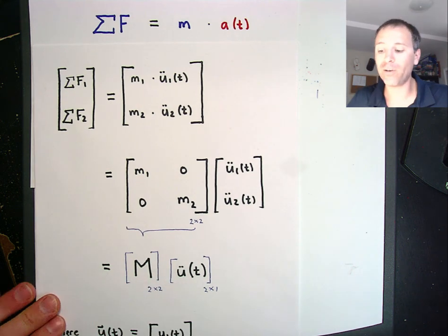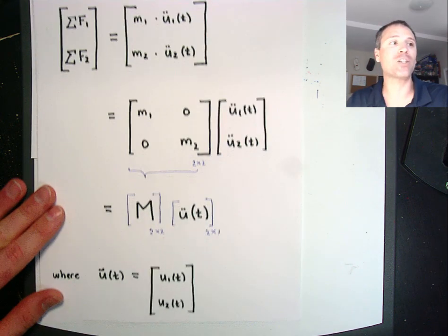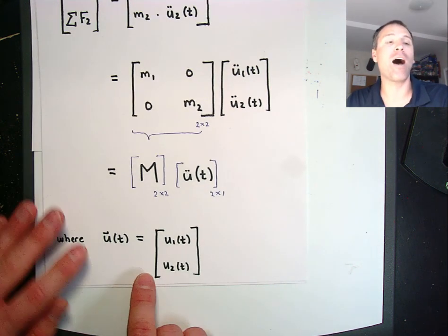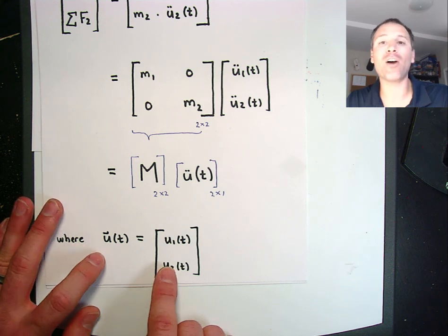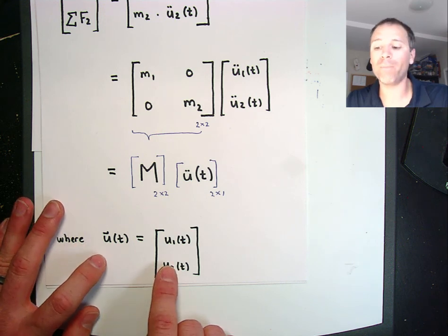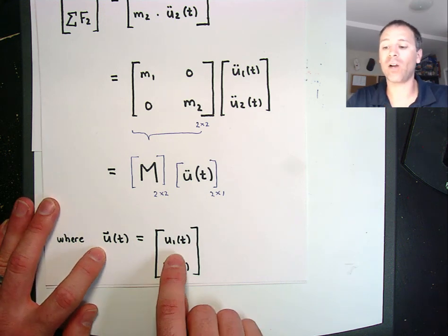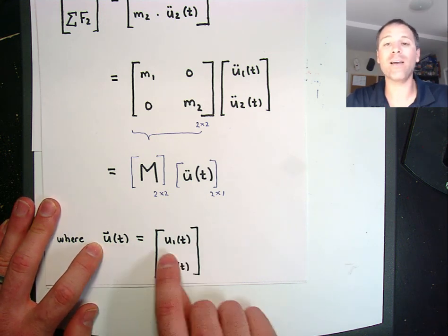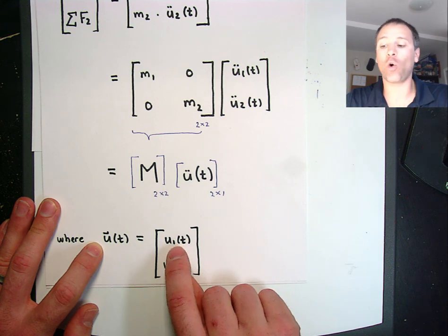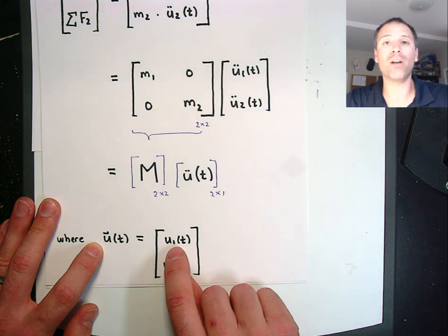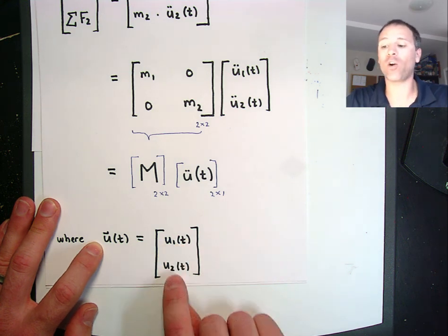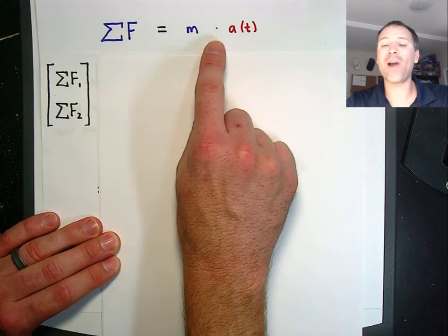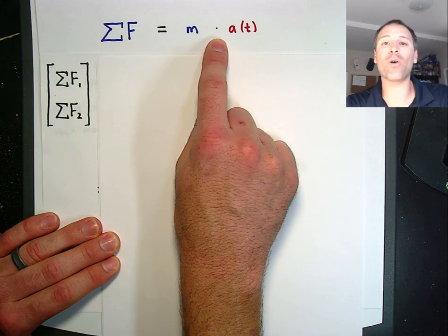The displacement function is actually vector-valued. So u(t) has in coordinate 1 the function u1(t), and in coordinate 2 the function u2(t). That takes care of the right-hand side.